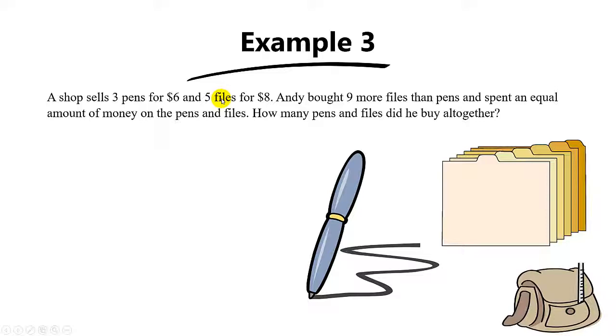You do not need to find a common multiple of 3 and 5 because the question did not say that Andy brought an equal number of pens and files. So what do we do?